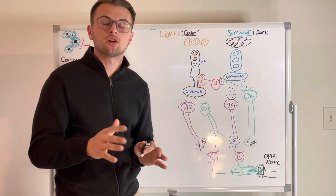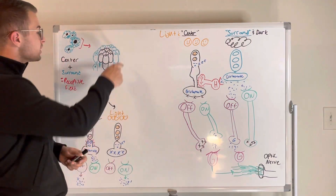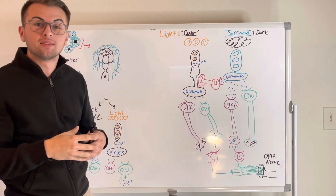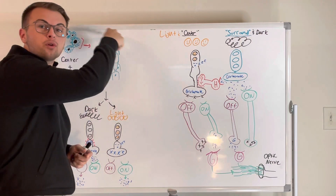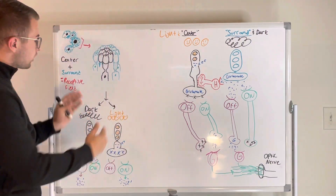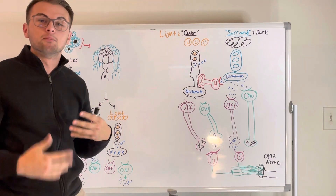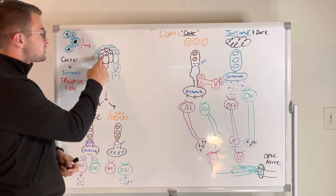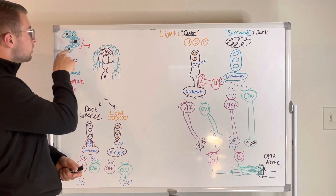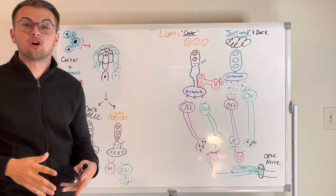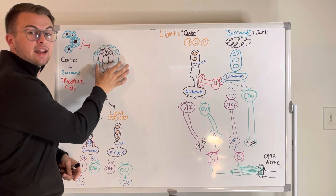Before we get started, we need to know a few things. A receptive field is essentially a large group of photoreceptors that all send information to a particular ganglion cell. It is basically a bunch of photoreceptors in a bullseye shape that all funnel their information down to eventually one ganglion cell. The bullseye or center of the receptive field is called the center, while the outside is called the surround because it surrounds the center.